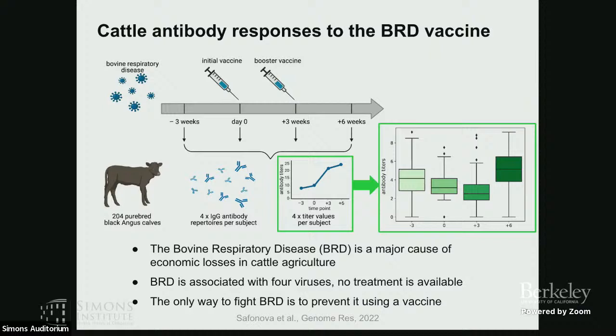Let me give one more example of how diverse antibody features can be, by moving from humans to cows. Cows have a unique immune system and are susceptible to bovine respiratory disease, a very costly disease that can only be prevented using a vaccine. Even in a population of purebred cows, our collaborators observed a really wide distribution of responses — genetically similar cows respond to the same vaccine very differently — and we decided to study why.